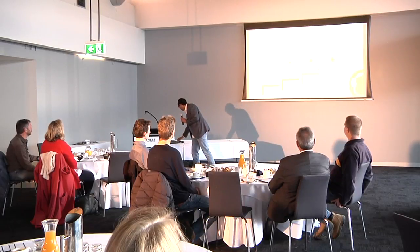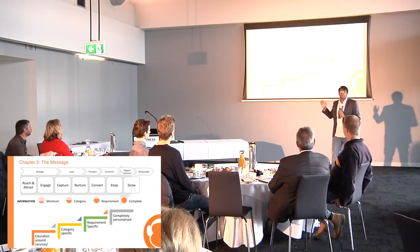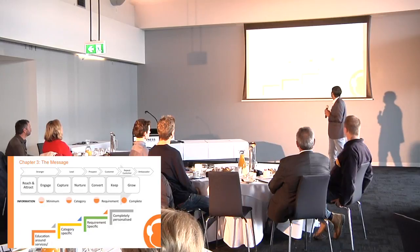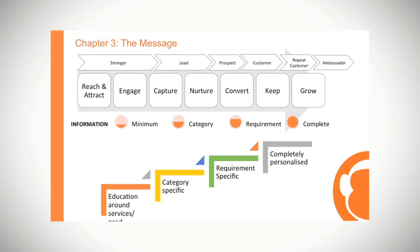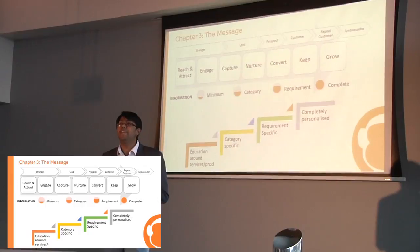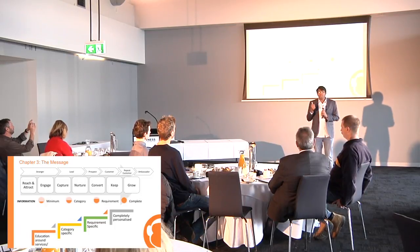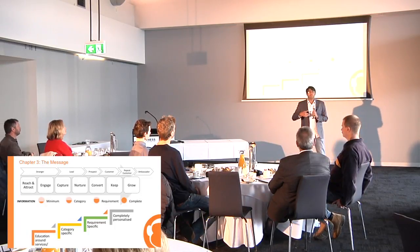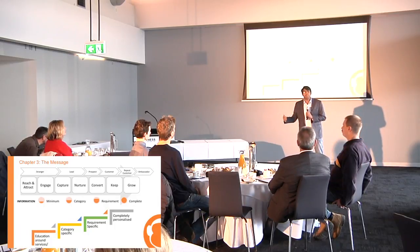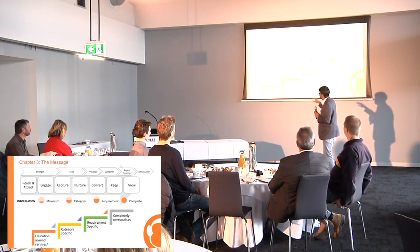Now, the third important thing to understand is the message. We talked about strategy and approach, we talked about the people — the third important element across the customer journey is the message. Starting from reach and attract through to grow, when we are dealing with strangers we have very little information about them. We don't know their names or what they do, though we may know they are from our target market.